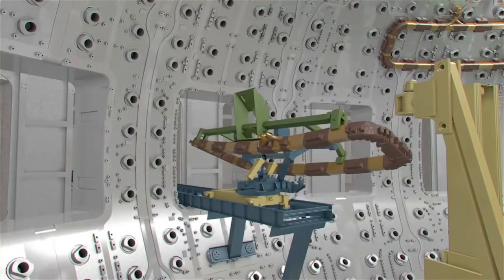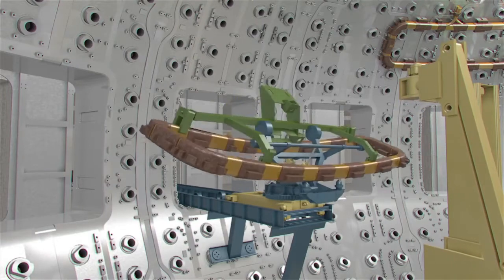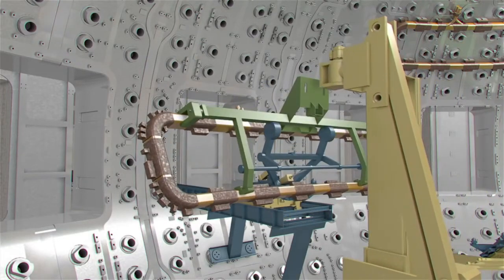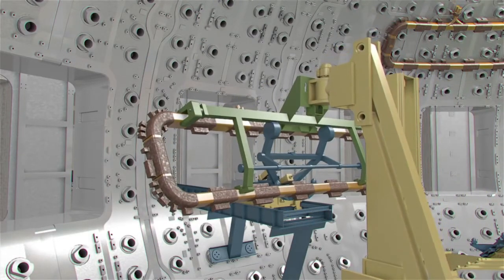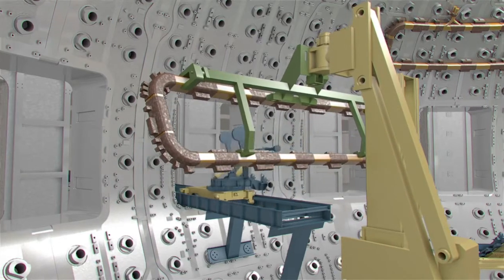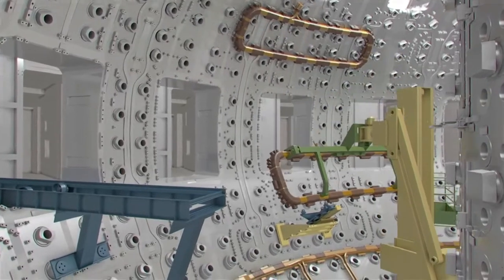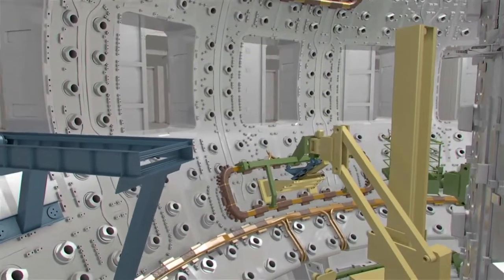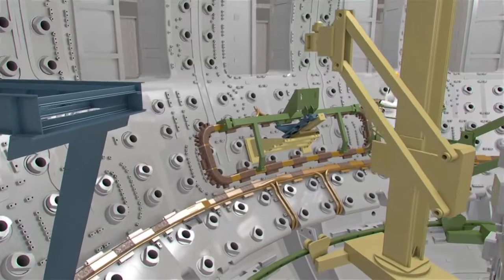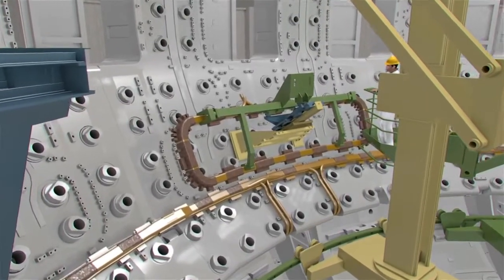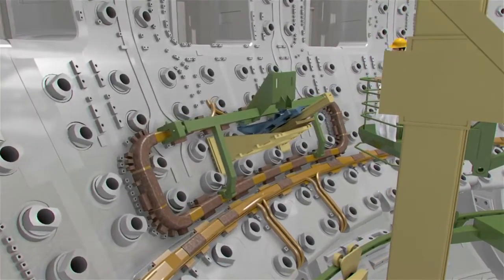The ELM coils will be delivered to the vacuum vessel using the throughput transfer system. This 20m long delivery line is the workhorse amongst all the assembly tools, the jack of all trades. Once introduced into the vessel, the ELM coils are presented in their final orientation, to be collected and positioned by the in-vessel tower crane.